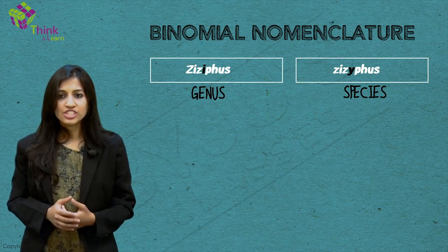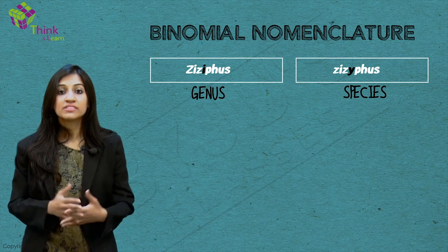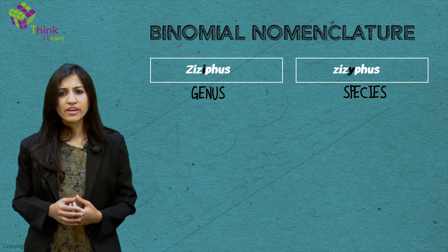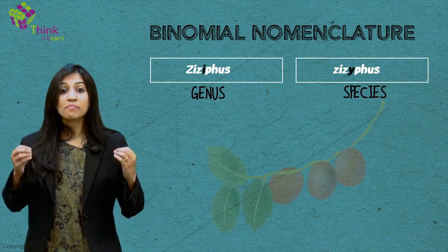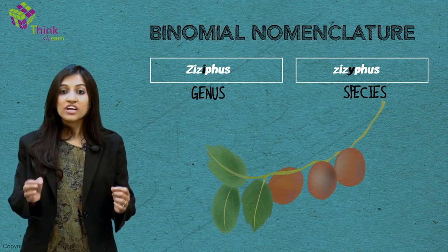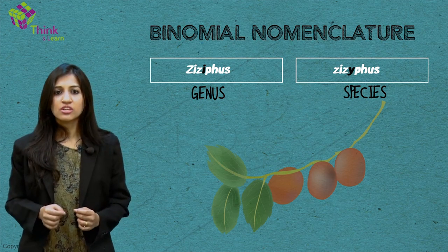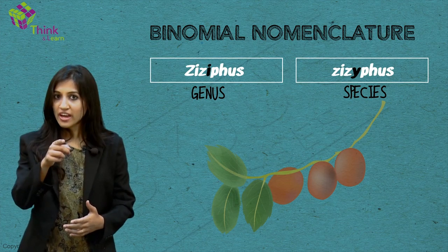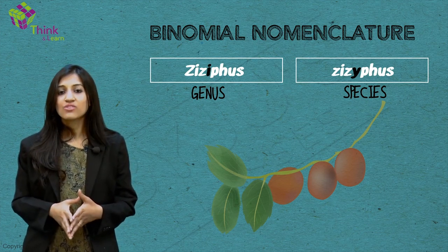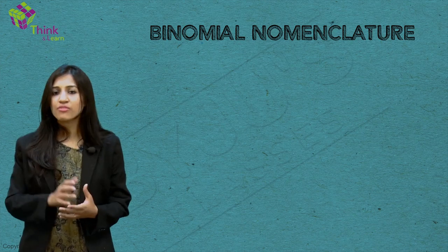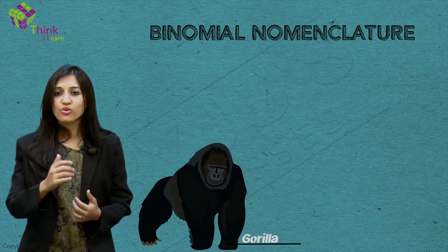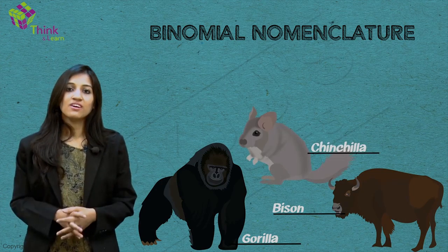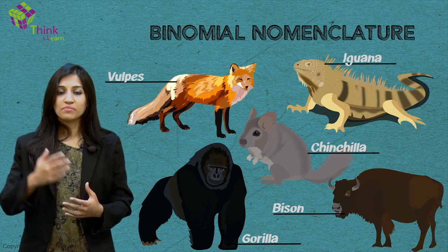Oddly, binomial nomenclature permits animals to have the same genus and species name, but not plants. The plant names that approach duplication fall just short — like Ziziphus zizyphus, note the 'i' and the 'y'. For animals, you have plenty: Gorilla gorilla, Bison bison, Chinchilla chinchilla, Iguana iguana, Vulpes vulpes. These are called tautonyms.